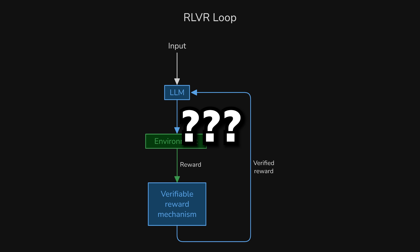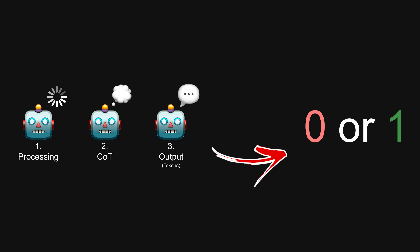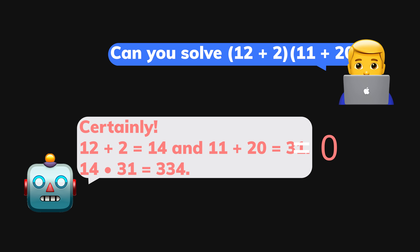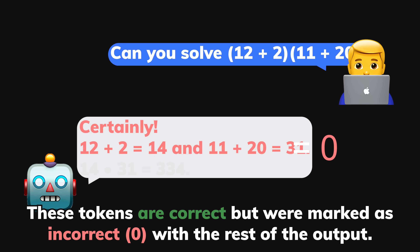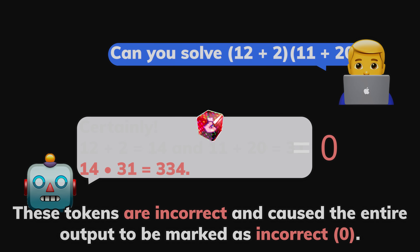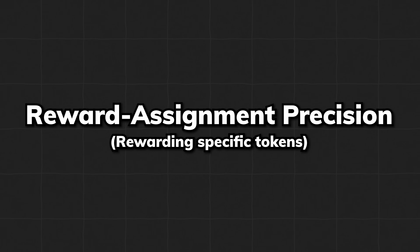However, this system is just too ambiguous in a way that after all the processings, all the chain of thoughts, and all the tokens generated, the reward signal is just a simple 0 or 1 over all these actions. How is the model going to know which part of this process was a pivotal point that decided the final outcome? This single trajectory reward is basically spread across thousands of mostly trivial tokens, making the feedback signal incredibly diluted while slowing down the learning. Which brings us to the key problem of RLVR: reward assignment precision.